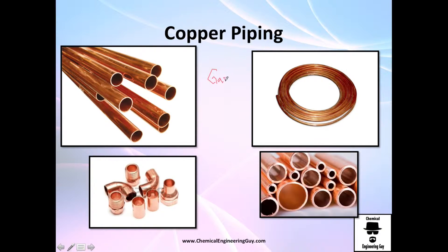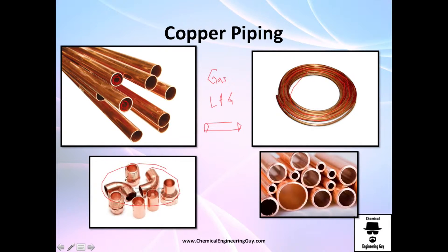Copper is very common, especially for natural gas or liquefied petroleum gases. It's also used for cold water, warm water, and so on. It's good because it is relatively cheap, very ductile, easy to shape, and you don't need as much energy to work with it as you would with steel.